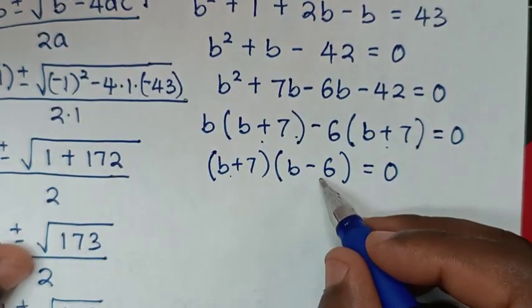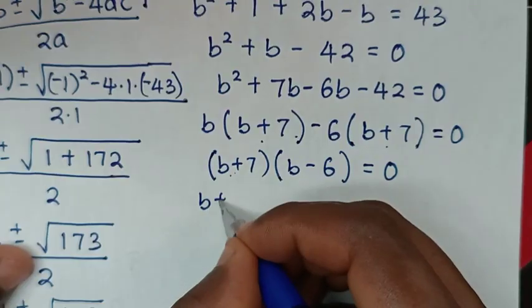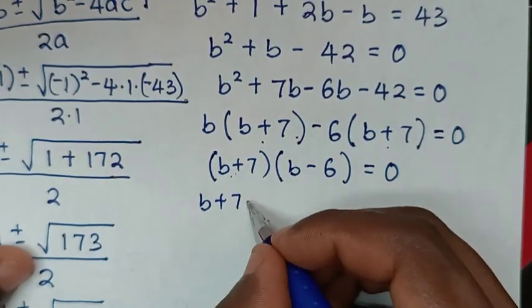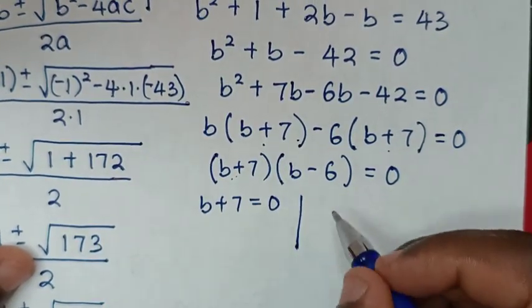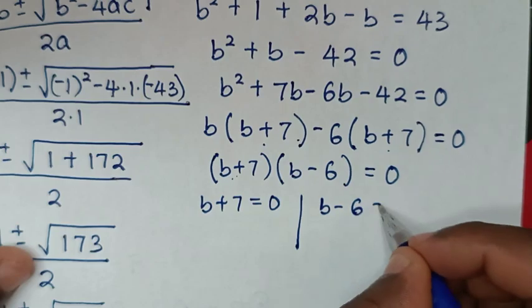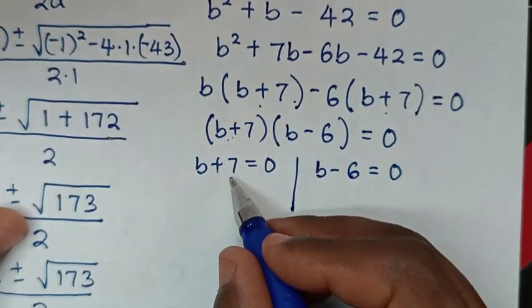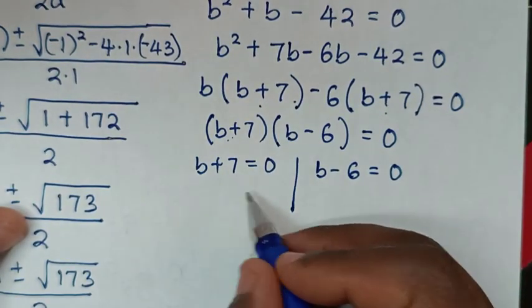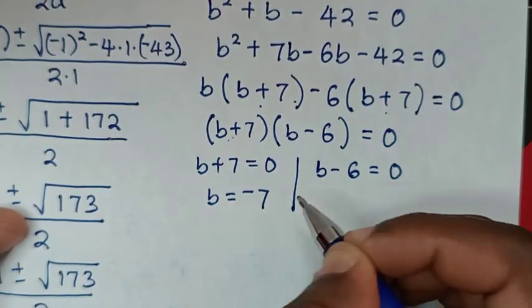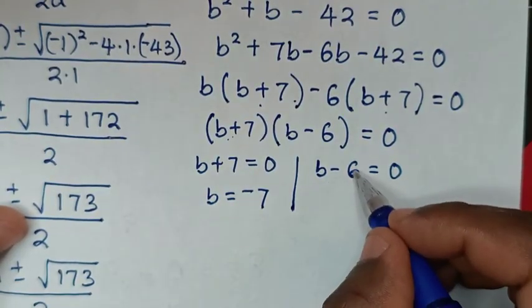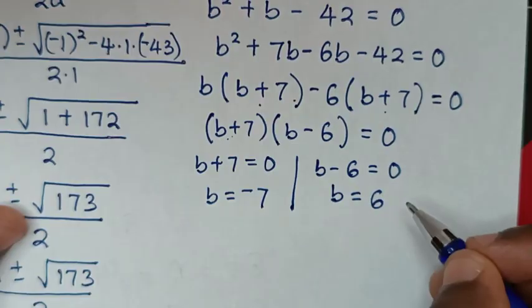From here we have two solutions: b plus 7 equals 0 gives b equals negative 7, and b minus 6 equals 0 gives b equals 6.